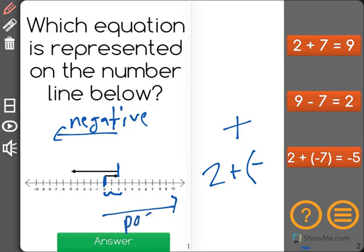So notice how we started at 0, our first arrow moved positive 2, and our second arrow is moving in a negative direction. 1, 2, 3, 4, 5, 6, 7.